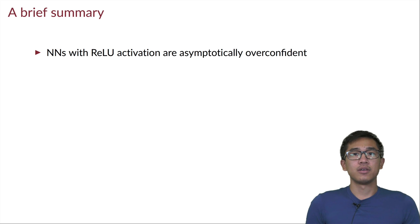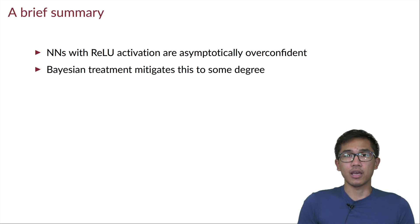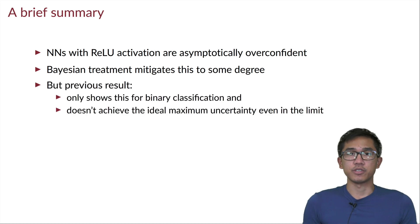We know that the point estimated version of a ReLU network will yield asymptotic overconfidence far from training data, and the Bayesian formulation of ReLU networks can actually be used to mitigate this issue to some degree. But previous results only showed this in the binary classification case, and also the result is not ideal in the sense that they don't achieve the maximum uncertainty far away from the training data.